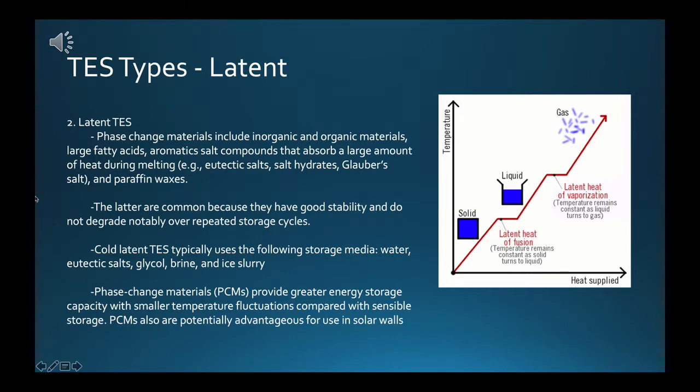Latent heat changes are the heat interactions during the phase change of a material at constant temperature, for example solid to or from liquid. Latent heat TES systems store or release thermal energy as a material changes phase. A latent heat change is usually much higher than a sensible heat change for a given amount of storage medium, giving latent TES a higher energy storage density. Phase change materials include inorganic and organic materials, large fatty acids, aromatic salt compounds such as eutectic salts, salt hydrates, engulfur salt, and paraffin waxes.